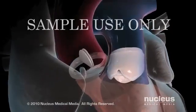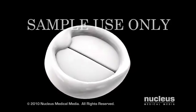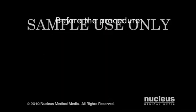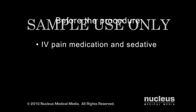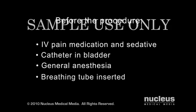An aortic valve replacement is performed to restore the valve to normal function. Before your procedure, an IV line will be started in your arm to provide fluids and medications, and a catheter will be inserted into your bladder to drain urine. Aortic valve replacements are done under general anesthesia, meaning you will be asleep for the duration of the operation, and a tube will be placed through your mouth and into your windpipe to help you breathe during surgery.